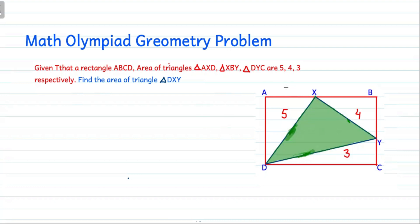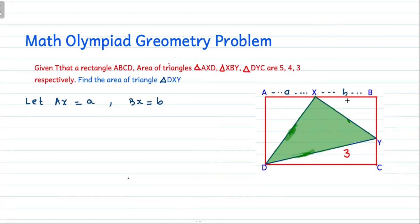First, we suppose that AX equals A. Let the length AX be equal to A, and the length BX be equal to B. Therefore we label these lengths as A and B respectively. Now we will write the length AD in terms of A and B.